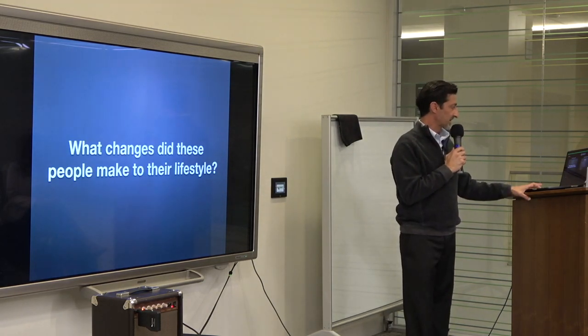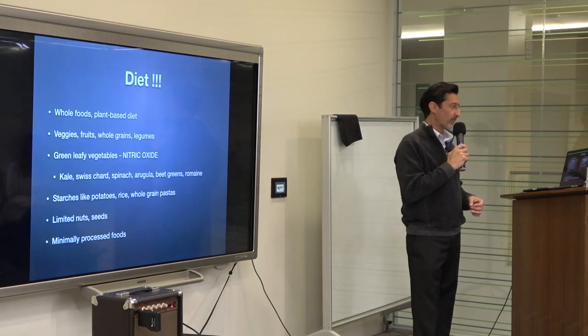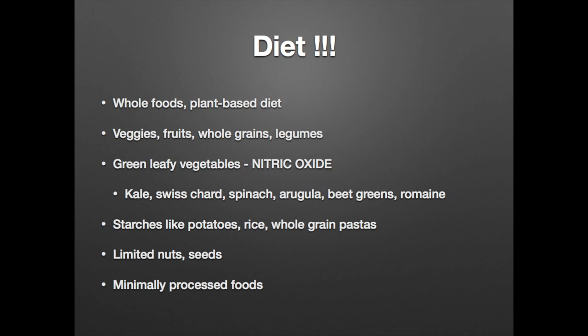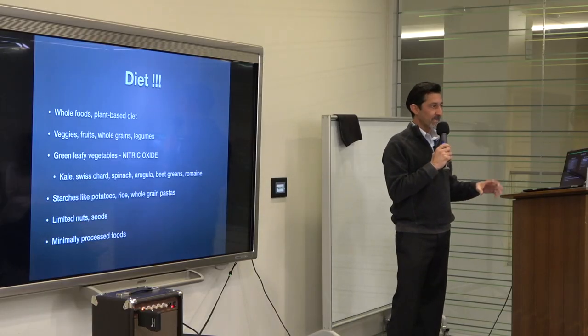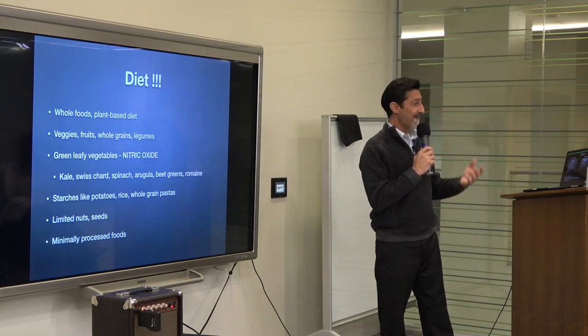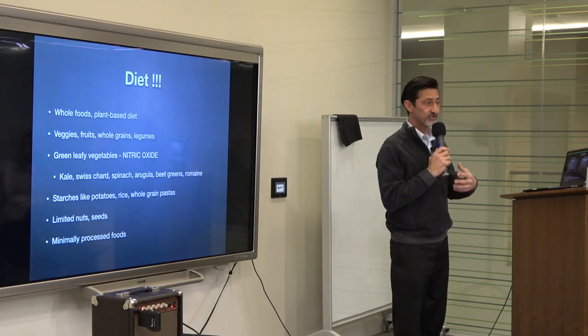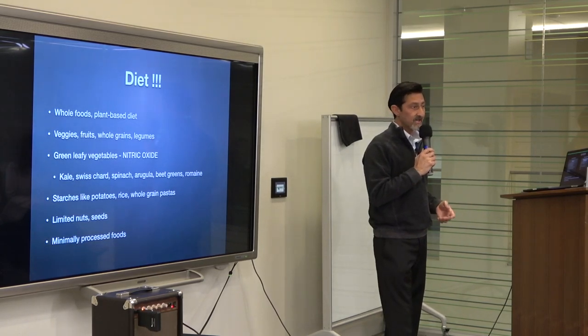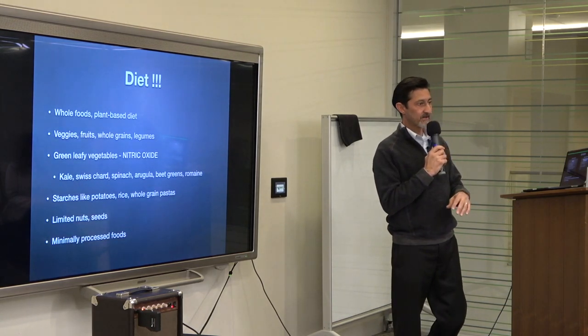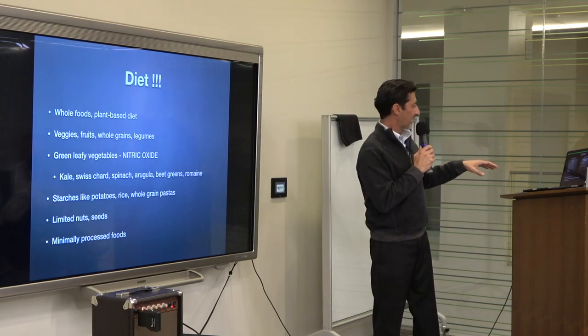What did these people do to change their lifestyle? One of the primary aspects was the diet. So it's a whole food plant-based diet. It includes fruits, vegetables, whole grains and legumes. It includes a lot of green leafy vegetables. For me, green leafy vegetables are my favorite because they produce a lot of nitric oxide in your body. If you actually have atherosclerosis and want to reverse it, you need to flood your body with nitric oxide so your arteries can repair themselves. After the age of 40, we tend to produce less nitric oxide over time, so it's important to eat your green leafy vegetables - kale, Swiss chard, spinach, arugula, beet greens. Include starches like potatoes, rice, and whole grain pastas. A limited number of nuts and seeds are very healthy for you and eliminate processed foods.